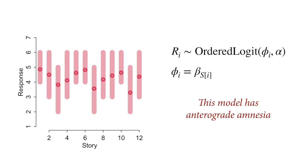The most obvious way would be to take our GLM strategy and create a vector of parameters — let's call it beta — for the stories. There would be 12 parameters in this vector, and we'd use the stories index as a regular index variable to index which parameter we need for each particular response. The problem with this approach, though it can work, is that it has anterograde amnesia.